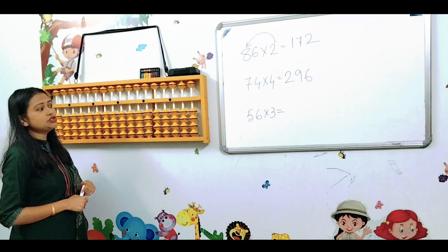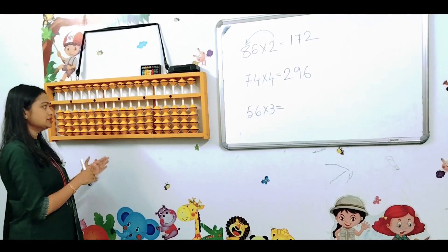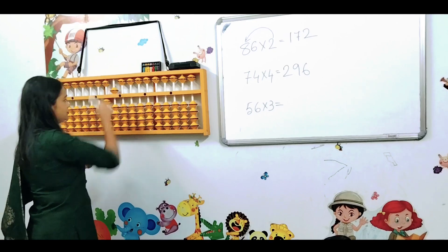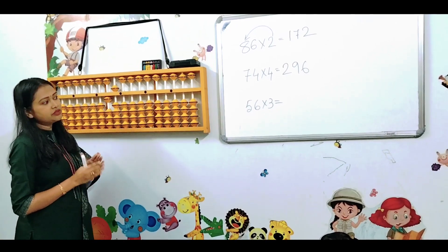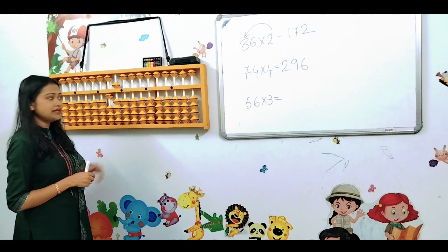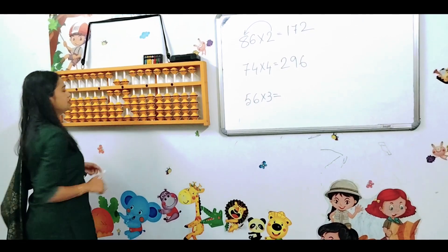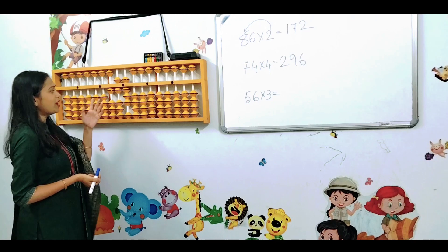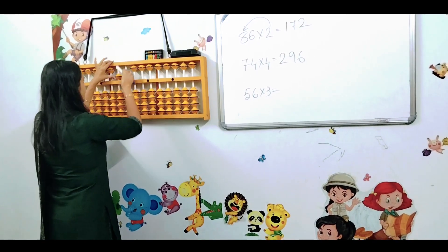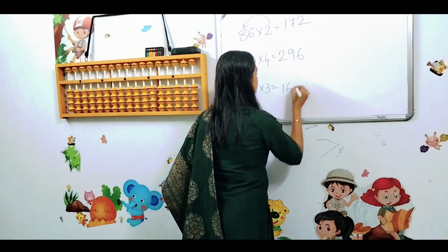Next, 56 into 3. First, 3, 5 is 15, then 3, 6 is 18. Here is your answer: 168. We will write the value of 0 and we will write the answer.